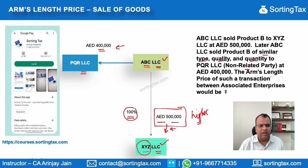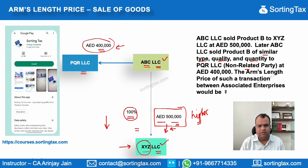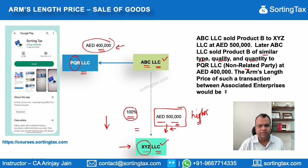In such a case, when XYZ LLC wants to claim a deduction for the purchase cost, this amount can be revised downward to AED 400,000 by the tax authorities. The reason is simple: the arm's length price is the price at which goods are sold to an independent party. In this case, the independent party is PQR LLC.